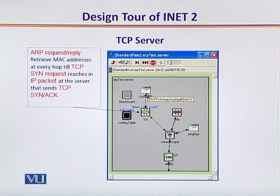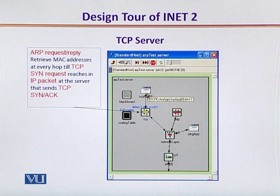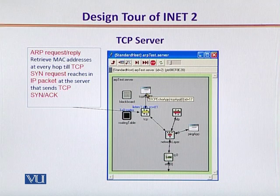This is the opened-up simple and compound module representation of the TCP server. Here we see that the process started at the client PC of sending a TCP SYN message eventually concludes and culminates with the ARP request-reply, which retrieved the MAC address at every hop, until the TCP SYN request reaches the server, and the server finally sends back the acknowledgement and another SYN to implement the three-way handshake.